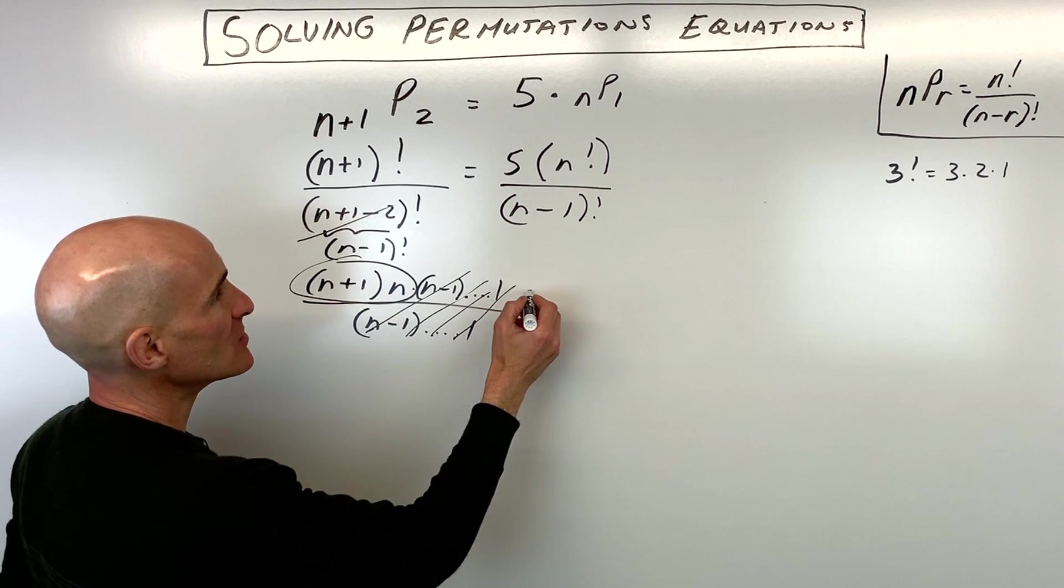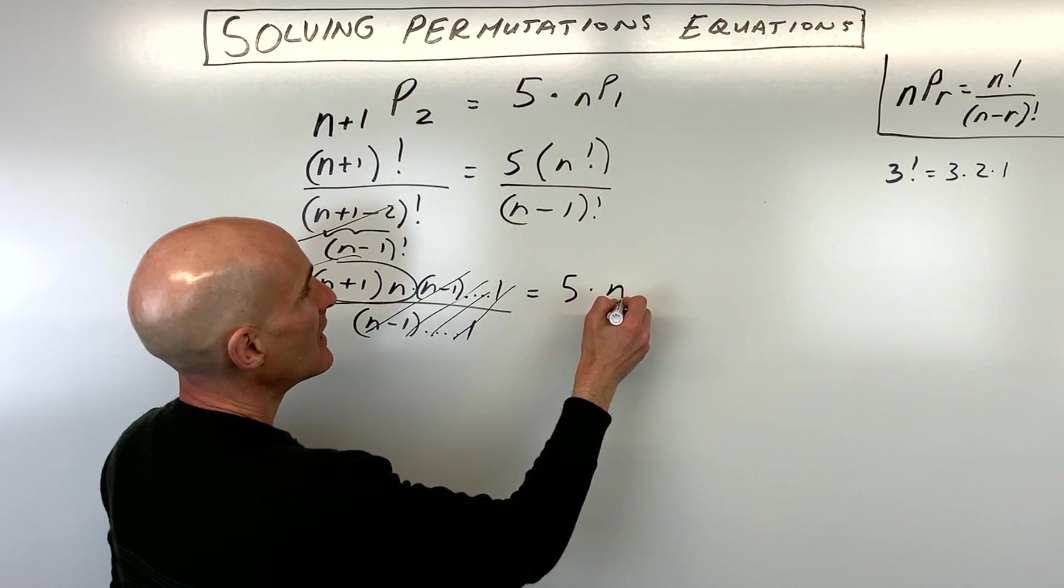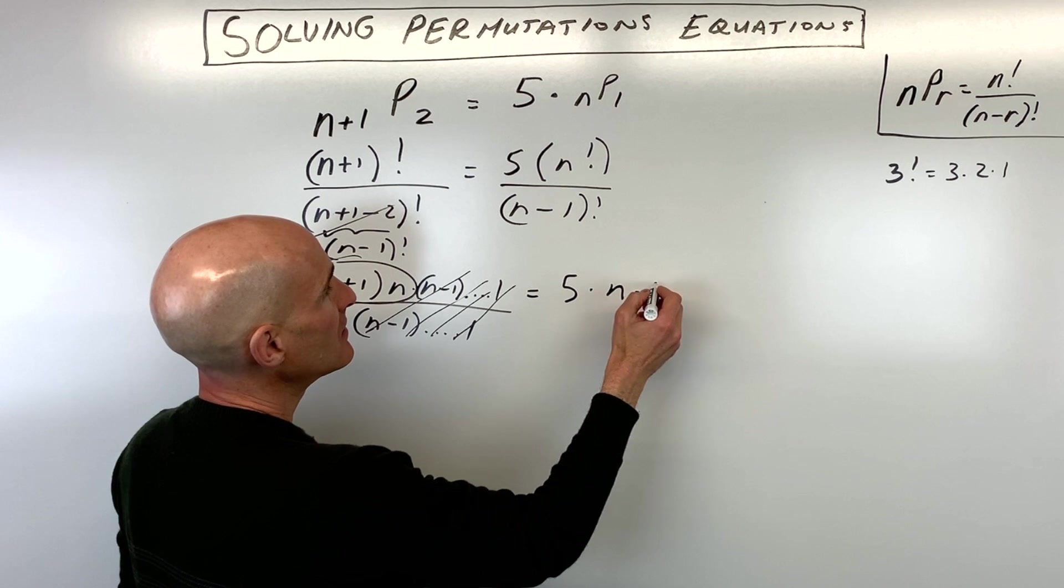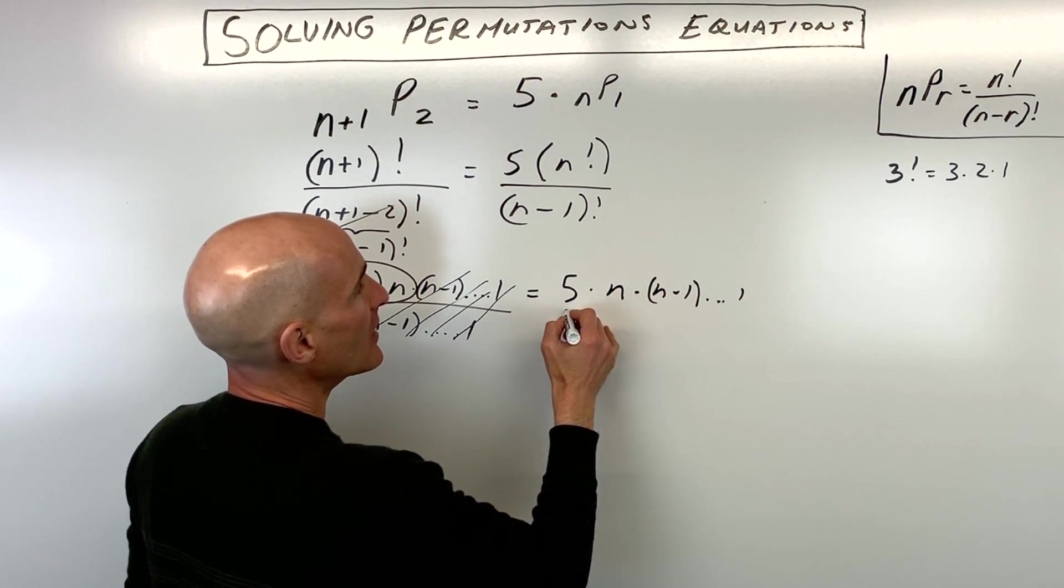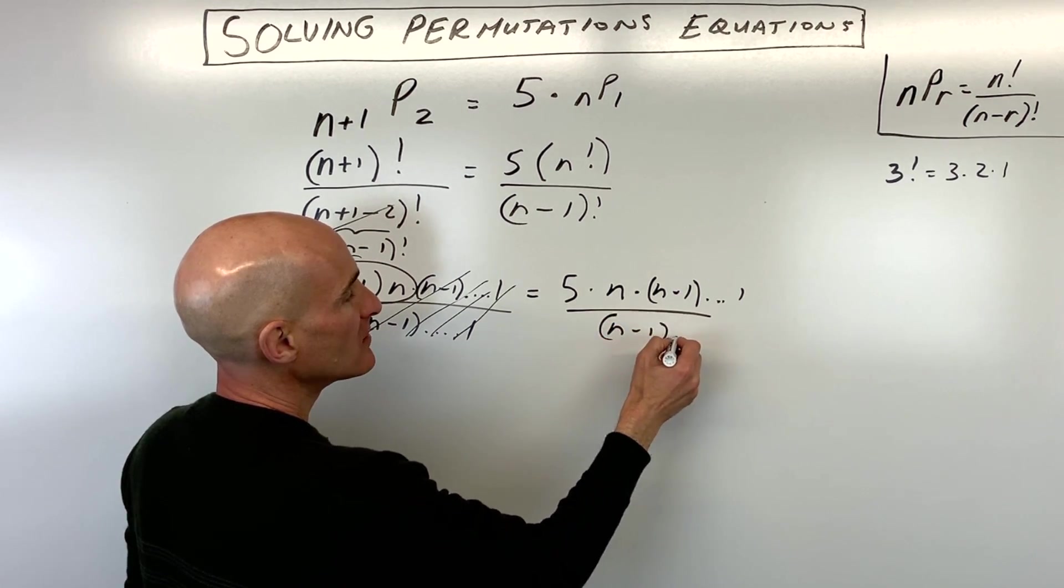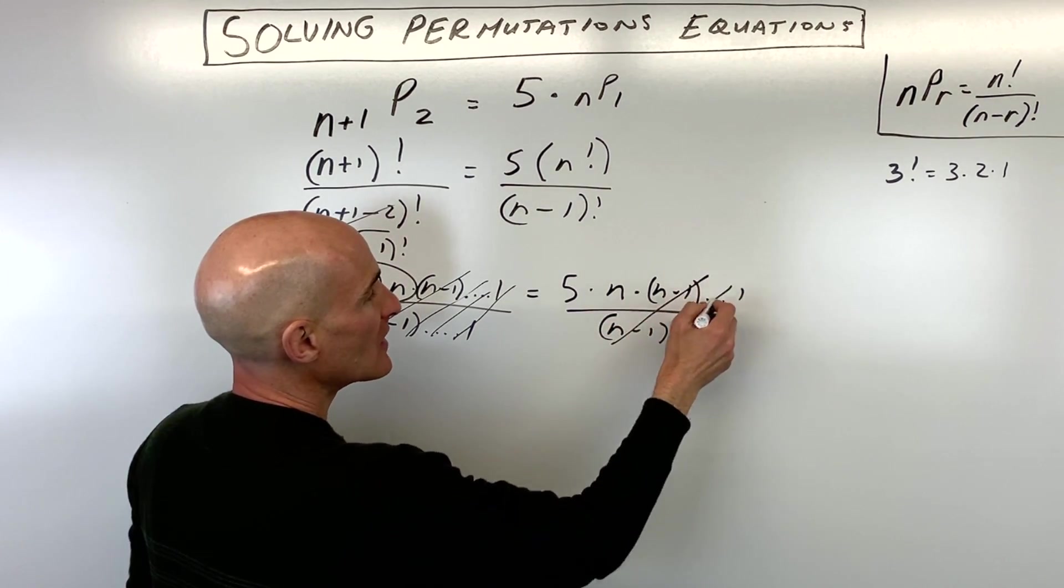On the right side of the equation, we have 5 times n factorial, which is n times (n minus 1) dot dot dot down to 1. Same thing, (n minus 1) factorial is (n minus 1) all the way down to 1. These are canceling.